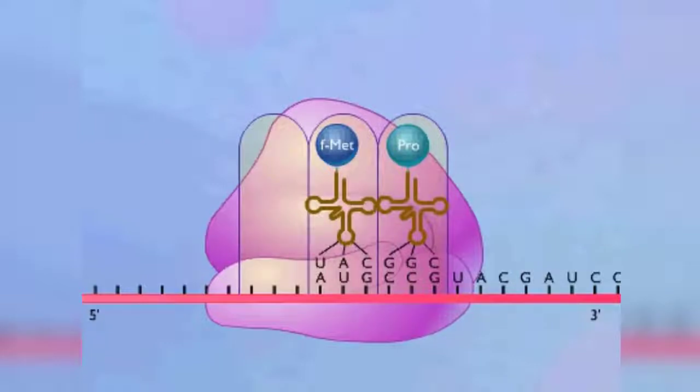The formyl methionine carried by the transfer RNA in the P-site is then joined to the amino acid carried by the transfer RNA that just entered the A-site by a peptide bond.